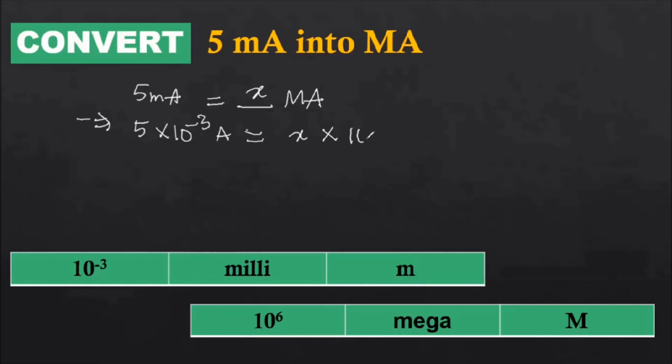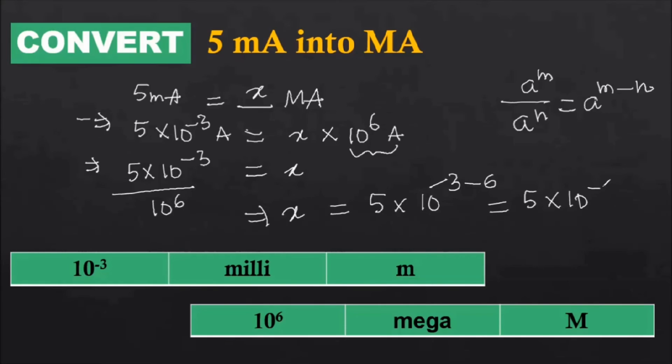So let's continue here. So I can write this as 5 into 10 power minus 3 amperes is equal to x into 10 power 6 amperes. Hence I can write here x is equal to 5 into 10 power minus 3 divided by 10 power 6. So again, same property: a power m by a power n. What am I going to get? A power m minus n. So I can write x is equal to 5 into 10 power minus 3 minus 6, so I am going to get 5 into 10 power minus 9.